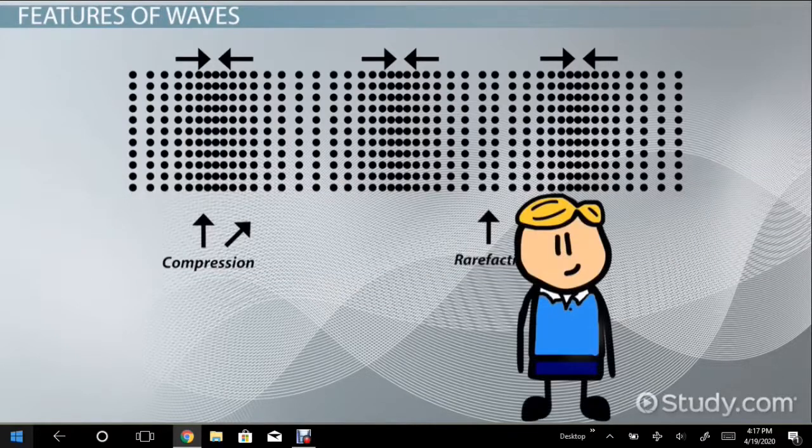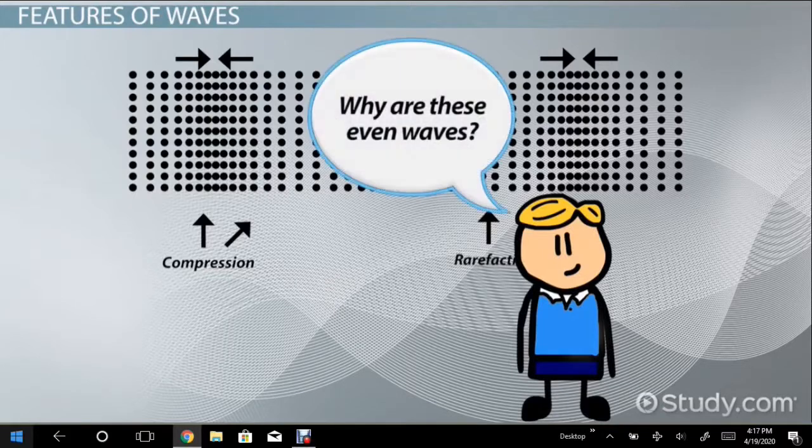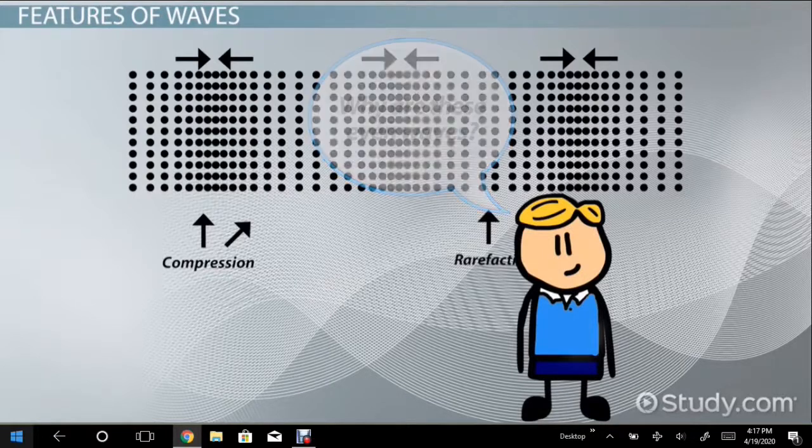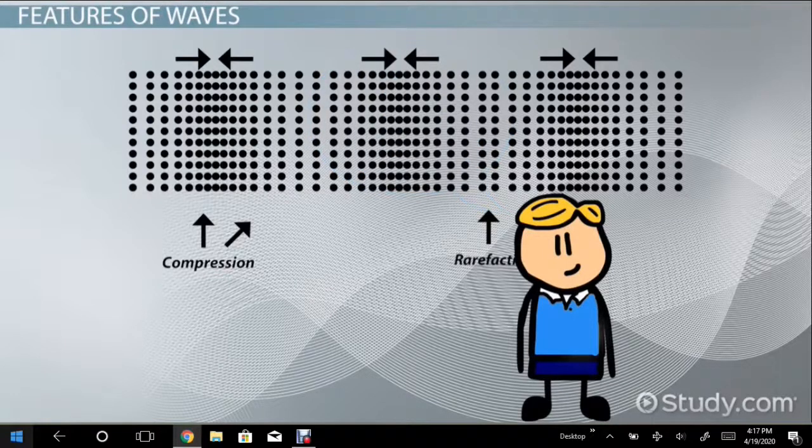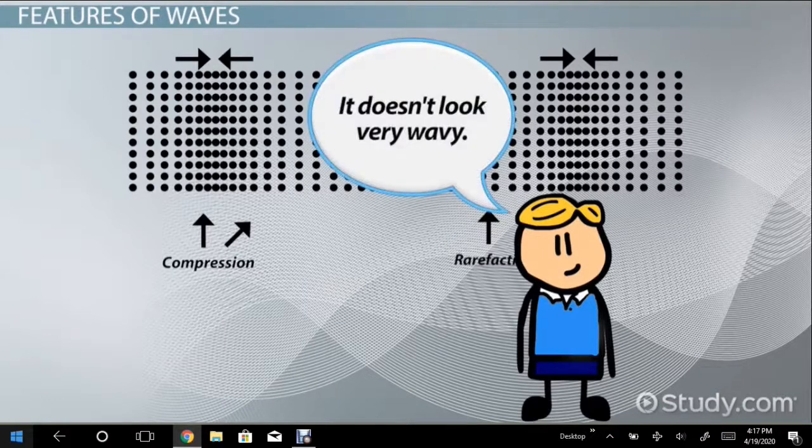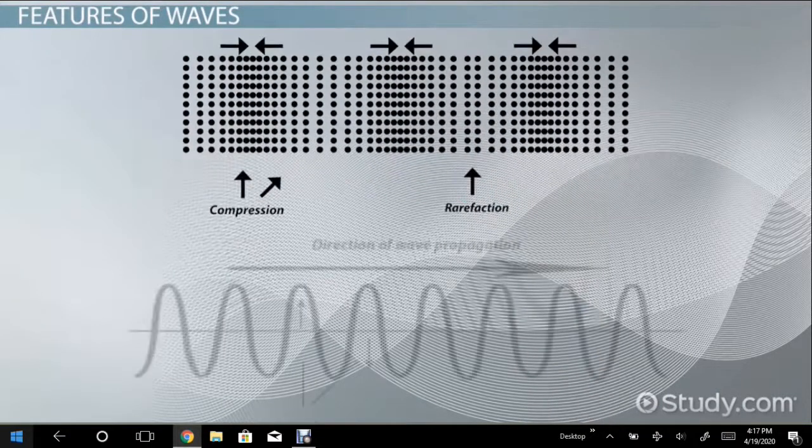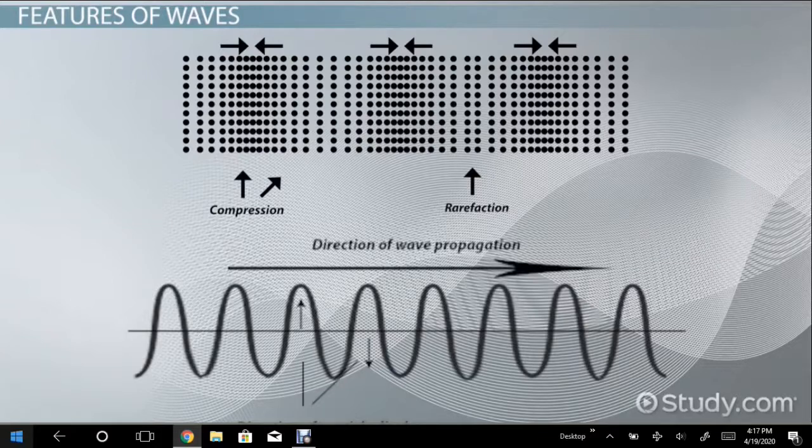One difficult part of understanding this topic is the question of why these compressions and rarefactions are considered to be a wave at all. After all, it doesn't look very wavy. But if we plot particle density across the image, we can see how we know that it is a wave. Much more wavy, don't you think?